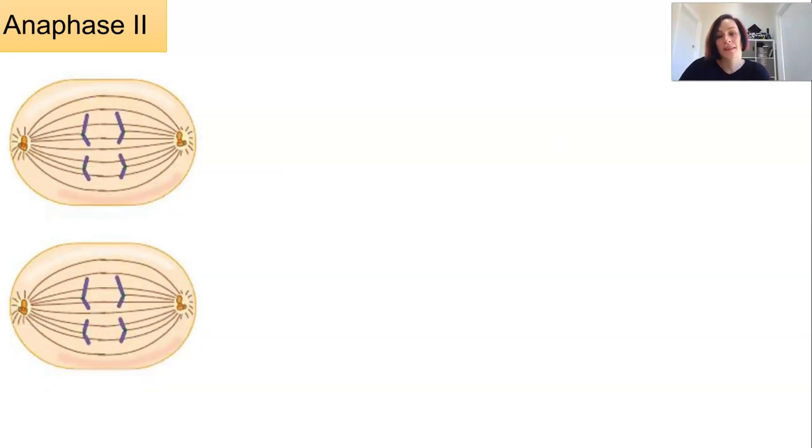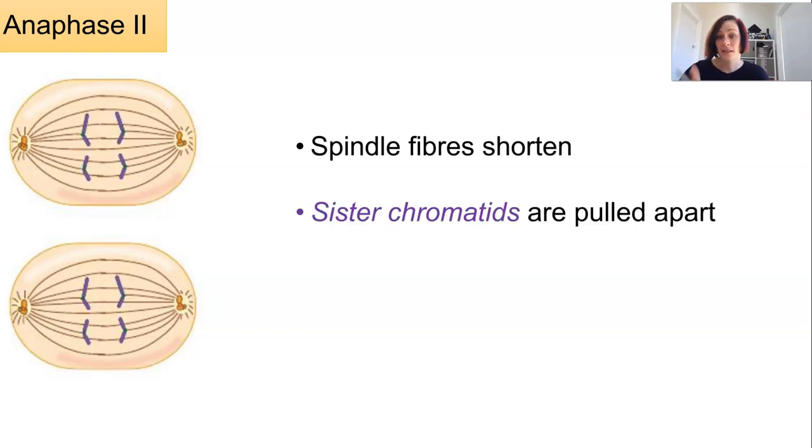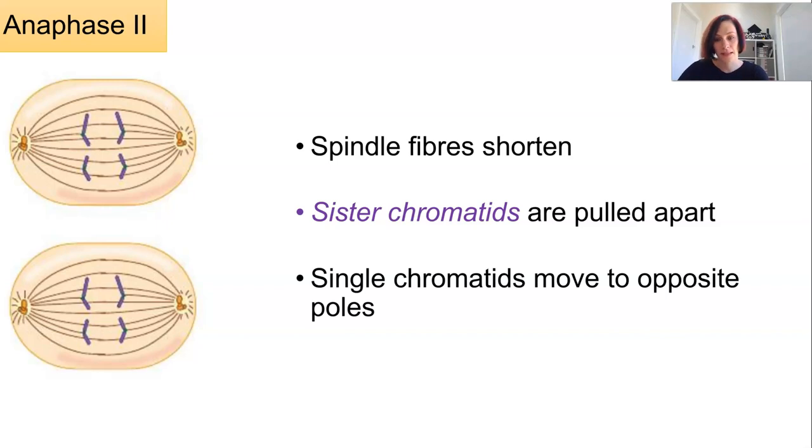In anaphase 2 the spindle fibres shorten like usual. This time the sister chromatids are pulled apart. This is a mitotic-like division. The sister chromatids are being pulled apart to opposite ends of the cell, to opposite poles of the cell.